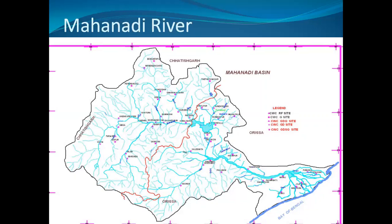Earlier, when Odisha was called Orissa, Mahanadi was called the 'sorrow river' because of the overflow and destruction it used to cause. But now, as dams have been built, it is no longer a sorrow river.